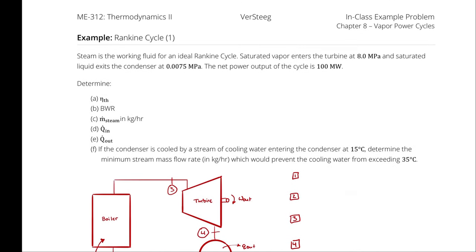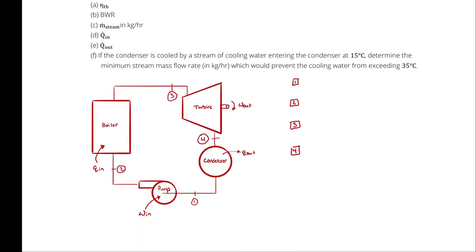First, let me pose the question: how many pressures do we have? There are two. Because, like the Brayton cycle, all heat addition and rejection processes in the Rankine cycle are assumed to be isobaric. So the condenser occurs isobarically, and the boiler occurs isobarically. Therefore, P2 is equal to P3, which is the high pressure, and P4 is equal to P1, which is the low pressure.